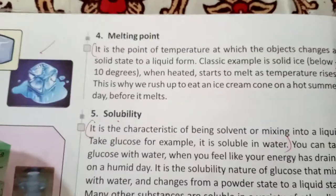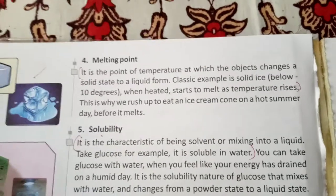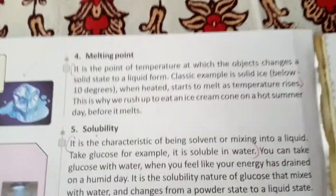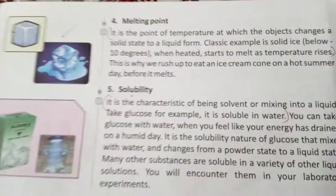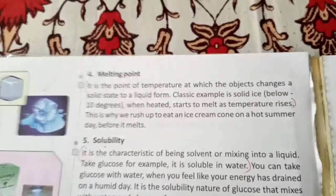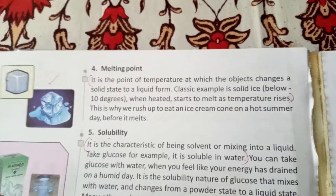Melting point. What is the melting point? The melting point is the temperature at which a solid state changes to a liquid form. Any solid form comes from the liquid form. When you put ice out of the freezer, what is the melting point? Classic example: solid ice. Ice is the most important example. If the temperature is below 0 degrees, it will melt. When heat starts, temperature rises. This is why you rush to eat an ice cream cone on hot summer days.